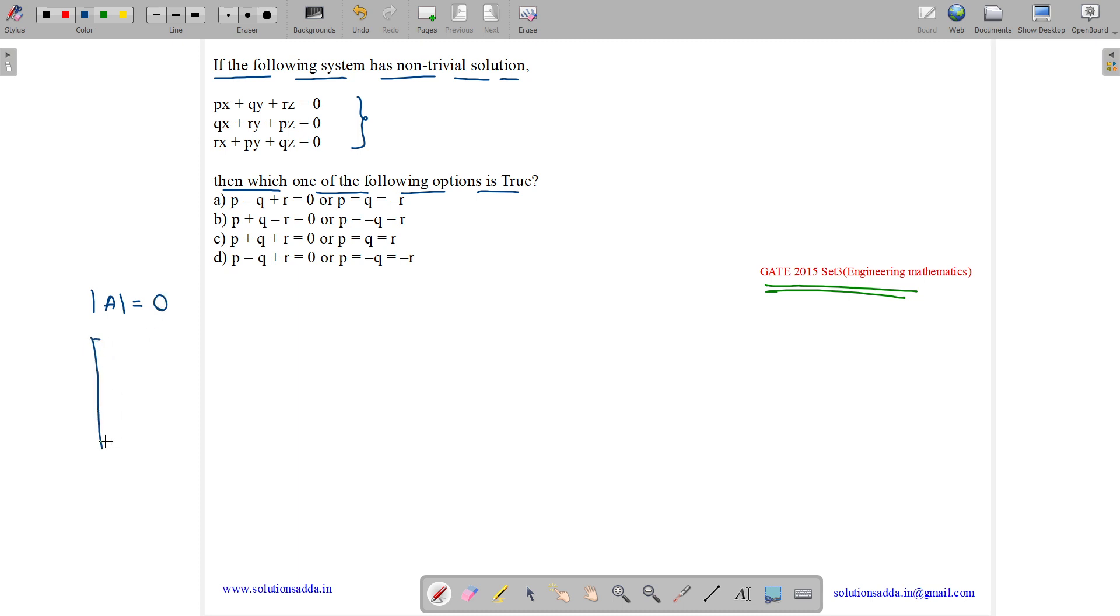What is the matrix represented by this? The matrix is PQR, QRP, RPQ. We just take the coefficients of X, Y, and Z. Its determinant is equals to zero.